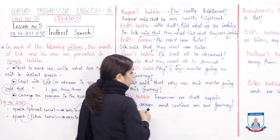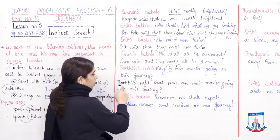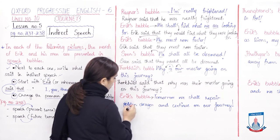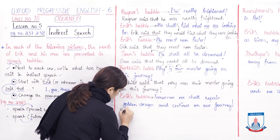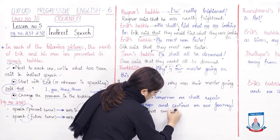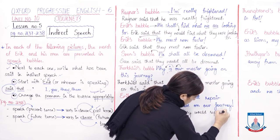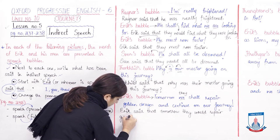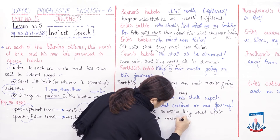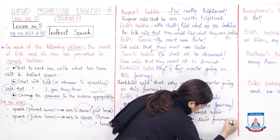One thing many students will forget here: the question mark. You must not forget that whether you write in indirect or direct speech, a question will remain a question. Thauclitz said that why was their master going on this journey? Next, Eric's bubble: 'Tomorrow we shall repair Golden Dragon and continue on our journey.' Eric said that they would repair Golden Dragon — 'we' changes to 'they' — and continue on their journey. 'Our' is also changed to 'their'.